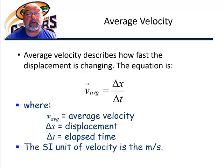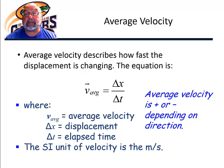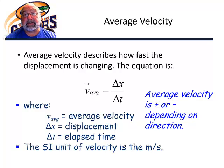Again, the SI unit for velocity is the meter per second. Average velocity is going to have a sign associated with it — it's either positive or negative — and it tells us what direction the motion is.